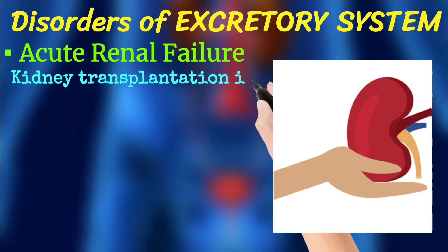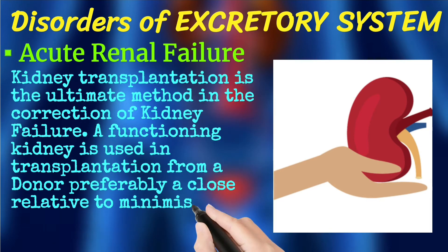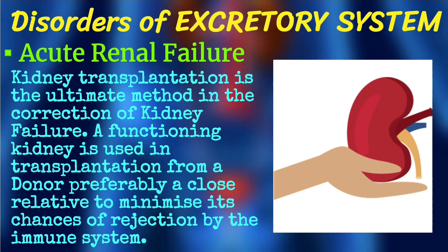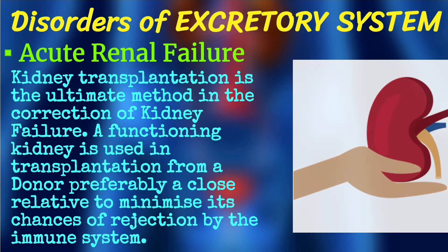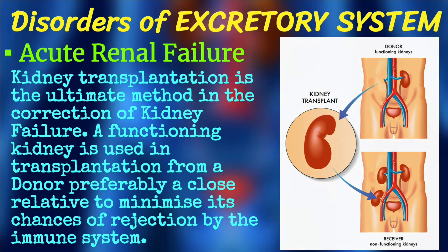In such patients, kidney transplantation is the ultimate method for correction of kidney failure. A functioning kidney is used in the transplantation from a donor, preferably a close relative, to minimize chances of rejection by the immune system. A kidney is taken from a family member or close relative and transplanted into the patient so the immune system does not reject it and the patient's life can be saved.